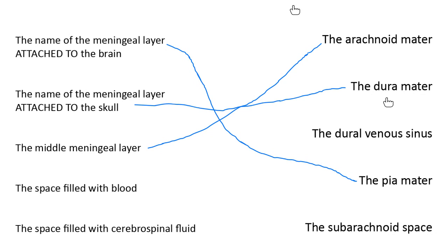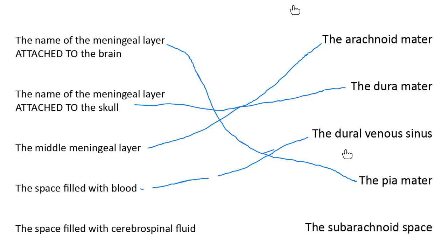The dura mater is the outermost meningeal layer. The dural venous sinus looks a lot like this word — it's a place where the thick dura mater actually splits in half. What is found in between the two parts of the dural venous sinus? Oxygen-poor blood. The dural venous sinus is the place where I put oxygen-poor blood, sending it back to the bloodstream to be recycled and given more oxygen.